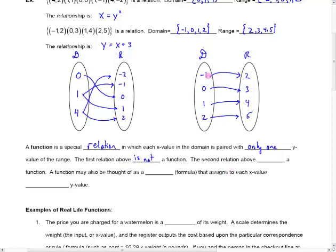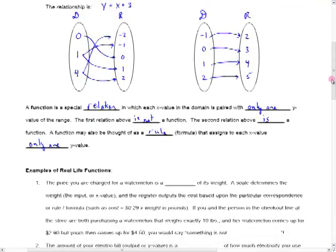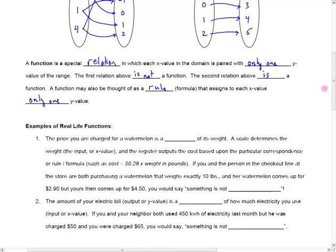Whereas the second relation, each x here is paired with only 1 y. So that is a function. Now a function, you can think of a function as a rule or a formula that assigns to each x value only 1 y value. So that rule or formula, we often use that in math. And let me give you an example to illustrate the idea.